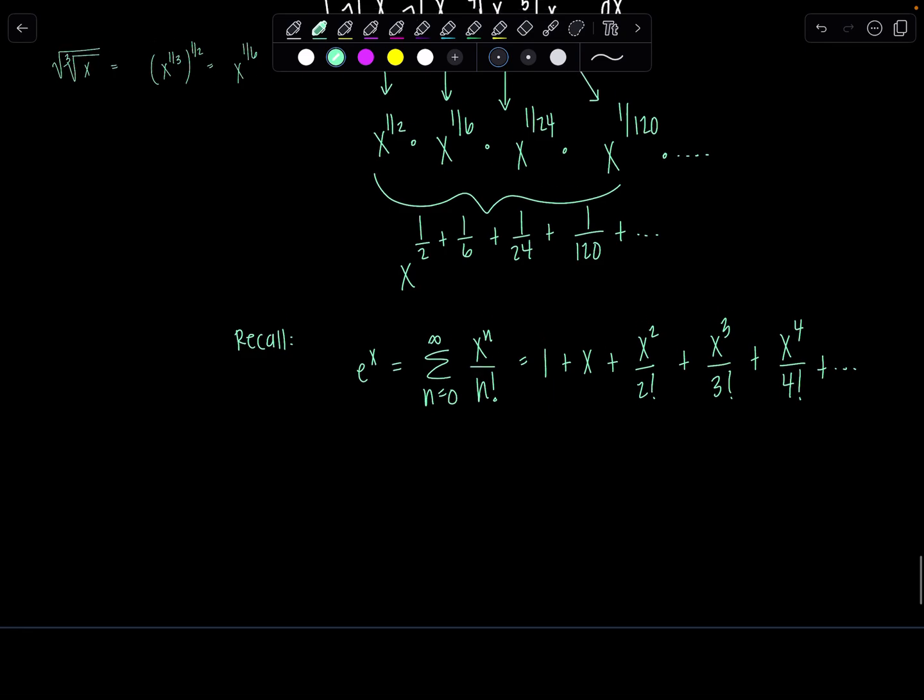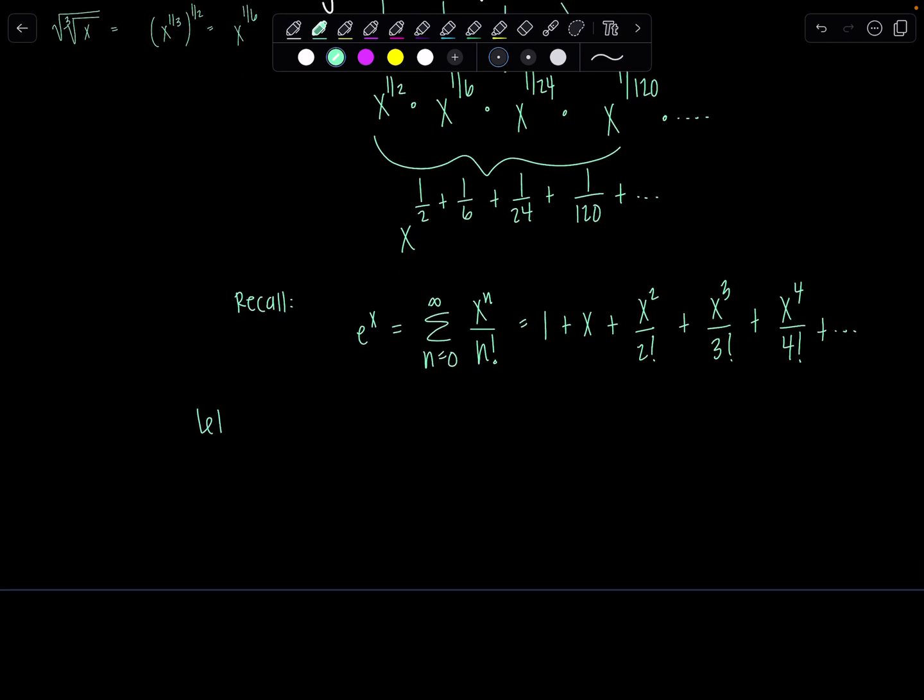And if we go ahead and let x equal 1, then that means e to the first is going to be, I'm just going to skip to this expanded version. If x is 1 we'd have 1 plus 1 plus 1 over 2 factorial plus 1 over 3 factorial plus 1 over 4 factorial, et cetera. And then hopefully now you're noticing that's precisely what I have in the exponent here, it's just the exponent doesn't have these first two terms 1 plus 1.